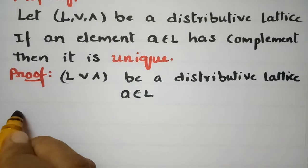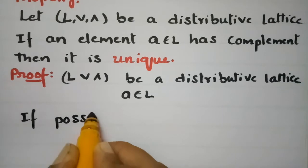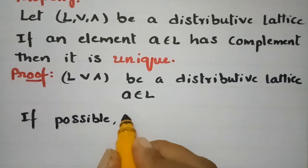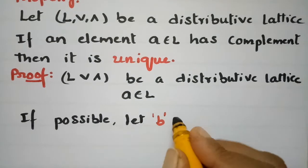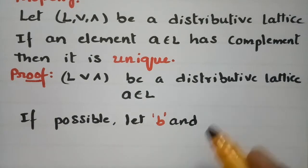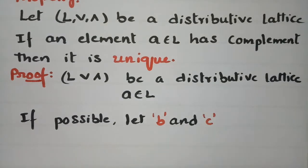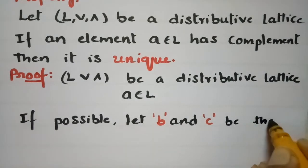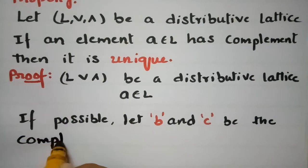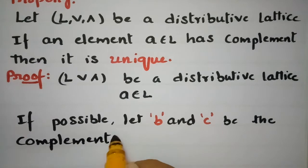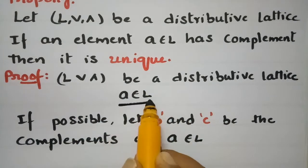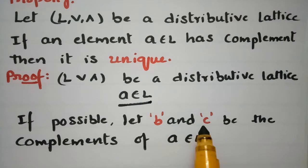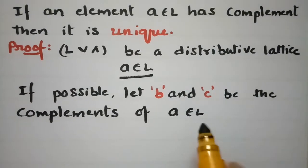If possible, suppose that there are two complements for A. Let B and C be the complements of A belonging to L. So L is a distributive lattice, A belongs to L, and we suppose that there are two complements for A. The conditions for each complement are as follows.